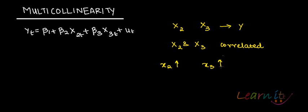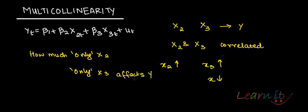Then the question is, can you tell how much only x2 or only x3 affects y? When these two independent variables themselves are correlated with each other, then is it possible for you to tell what is the separate effect of x2 on y and what is the separate effect of x3 on y? No, you can't.